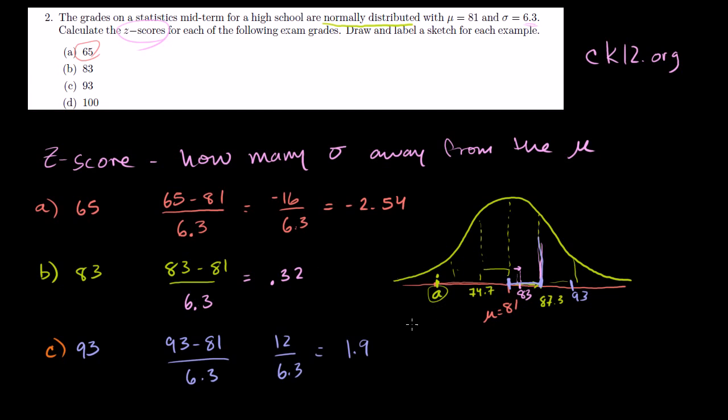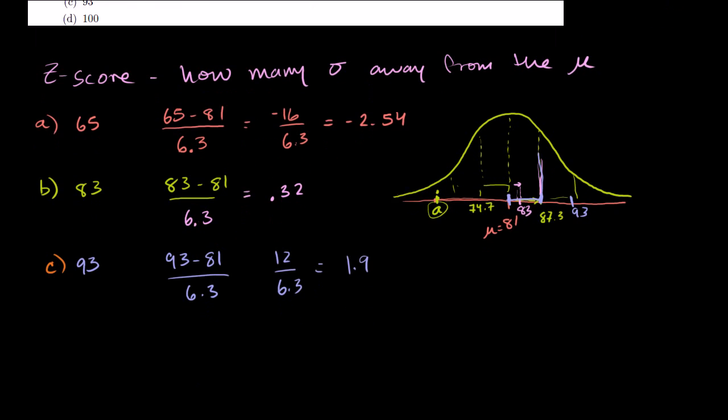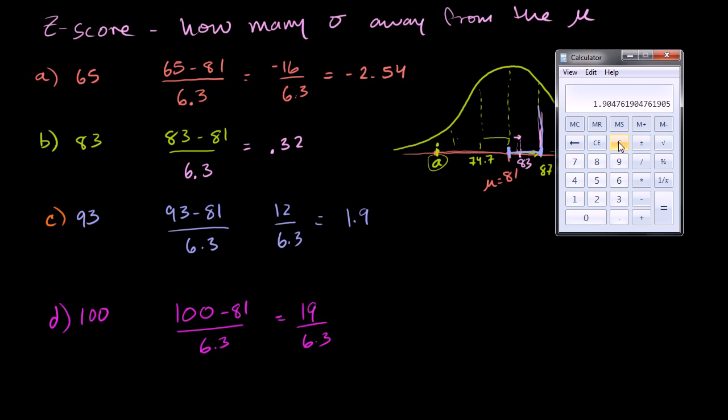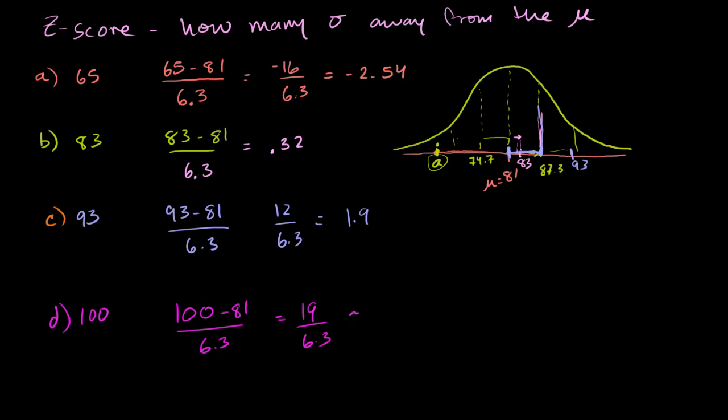Let's do the last one. I'll do it in magenta. Part D, a score of 100. We don't even need the problem anymore. A score of 100. Same thing. We figure out how far is 100 above the mean. Remember, the mean was 81. And we divide that by the magnitude of our standard deviation. So 100 minus 81 is equal to 19 over 6.3. So it's going to be a little over three standard deviations. And in the next problem, we'll see what does that imply in terms of the probability of that actually occurring. But if we just want to figure out the z-score, 19 divided by 6.3 is equal to 3.01, so it's very close. 3.02, really, if I were to round. So its z-score is 3.02. Or a grade of 100 is 3.02 standard deviations above the mean.